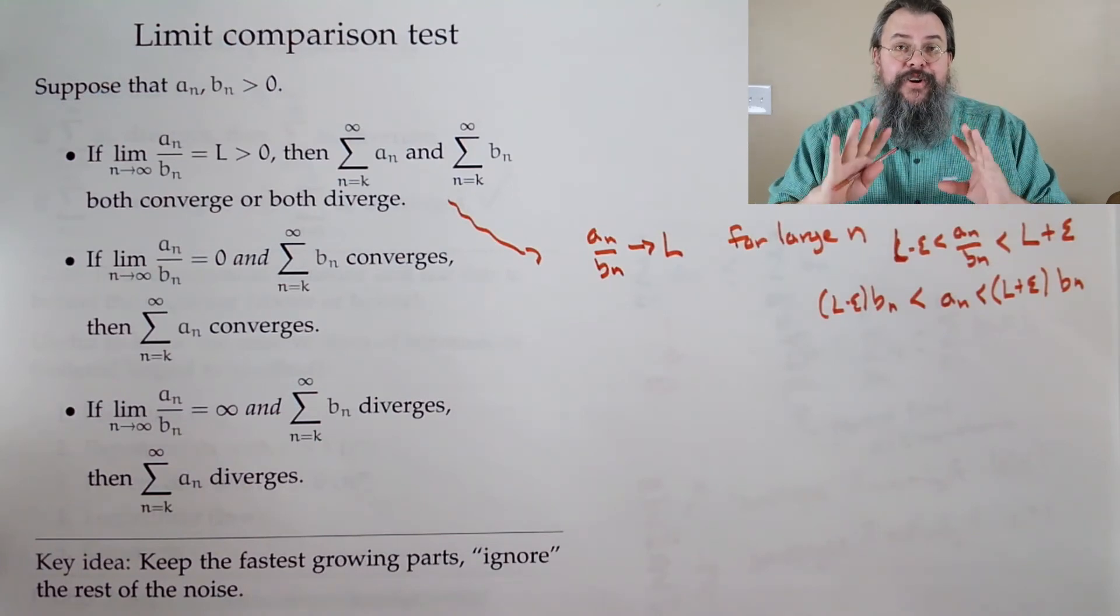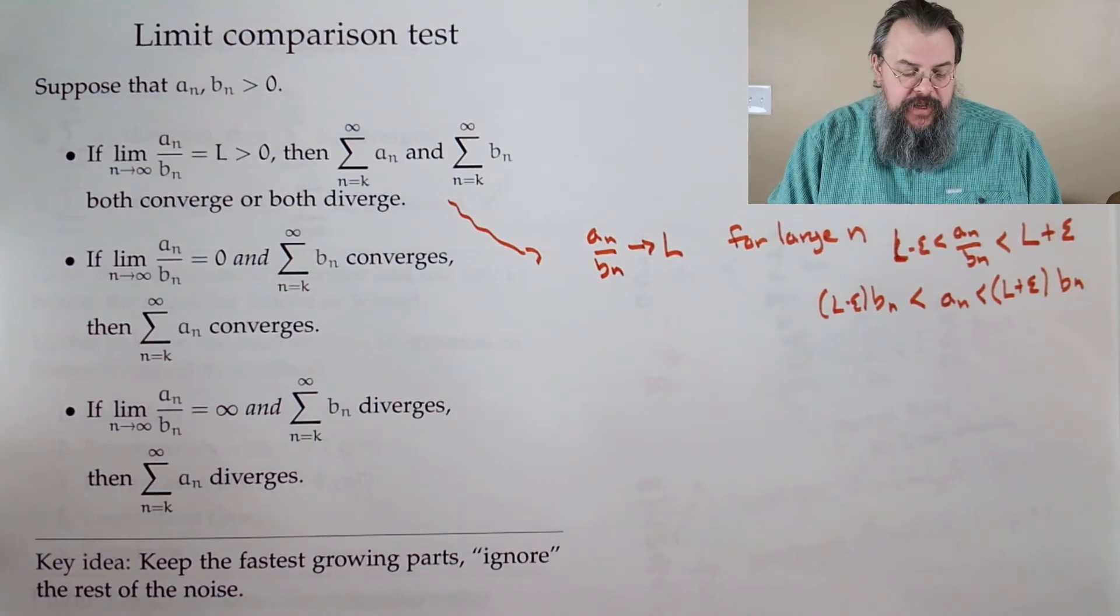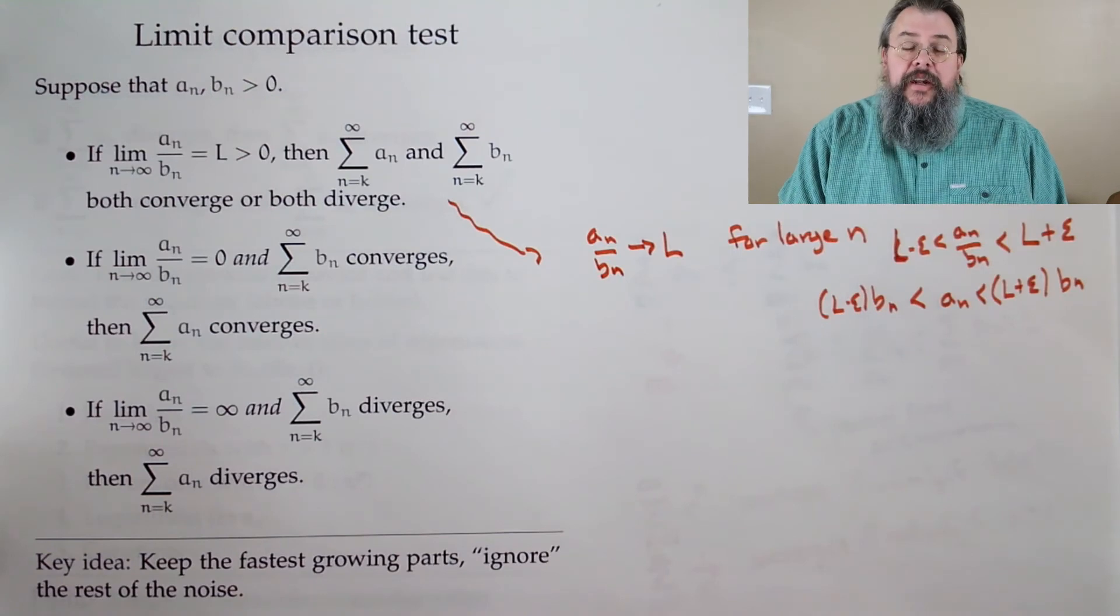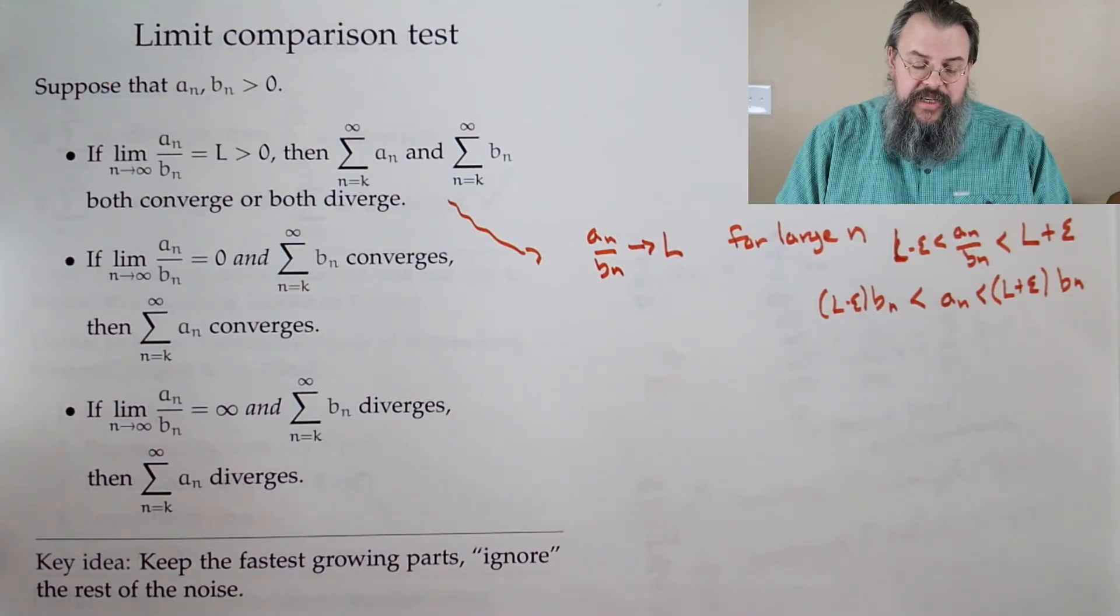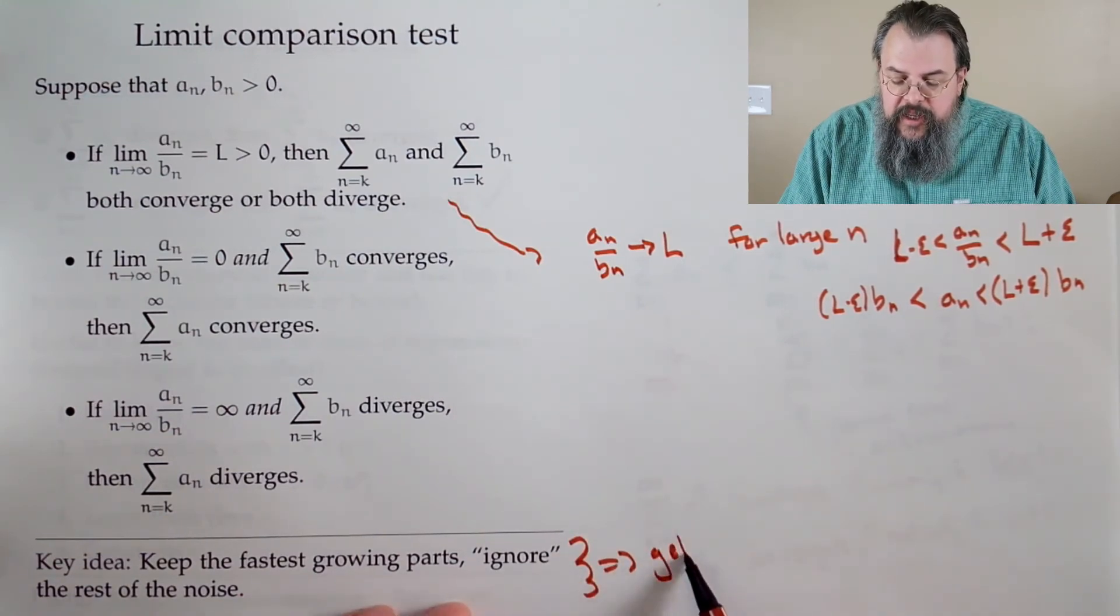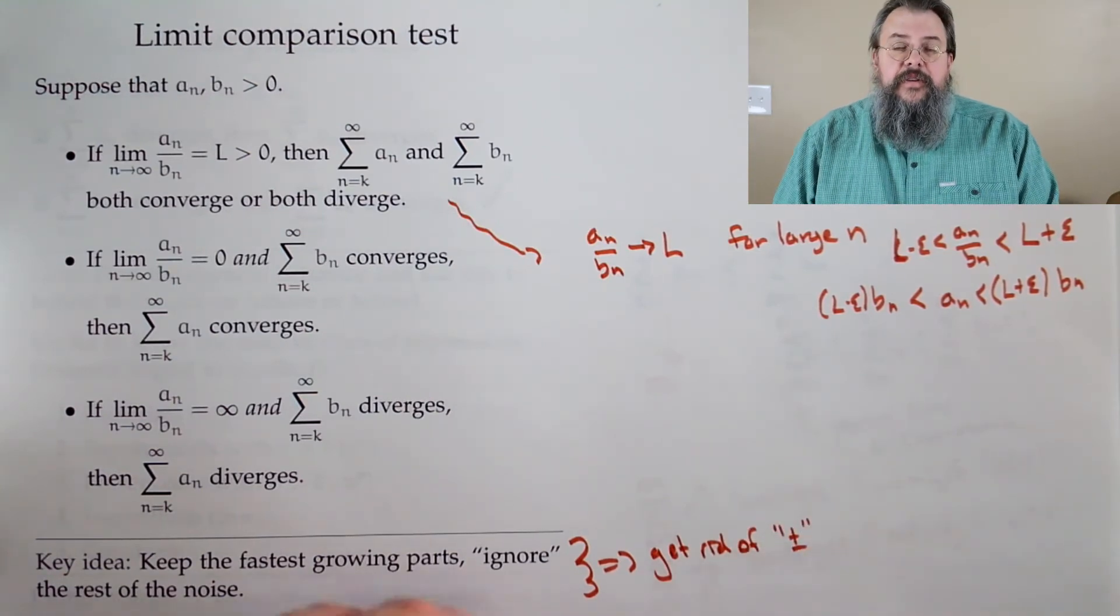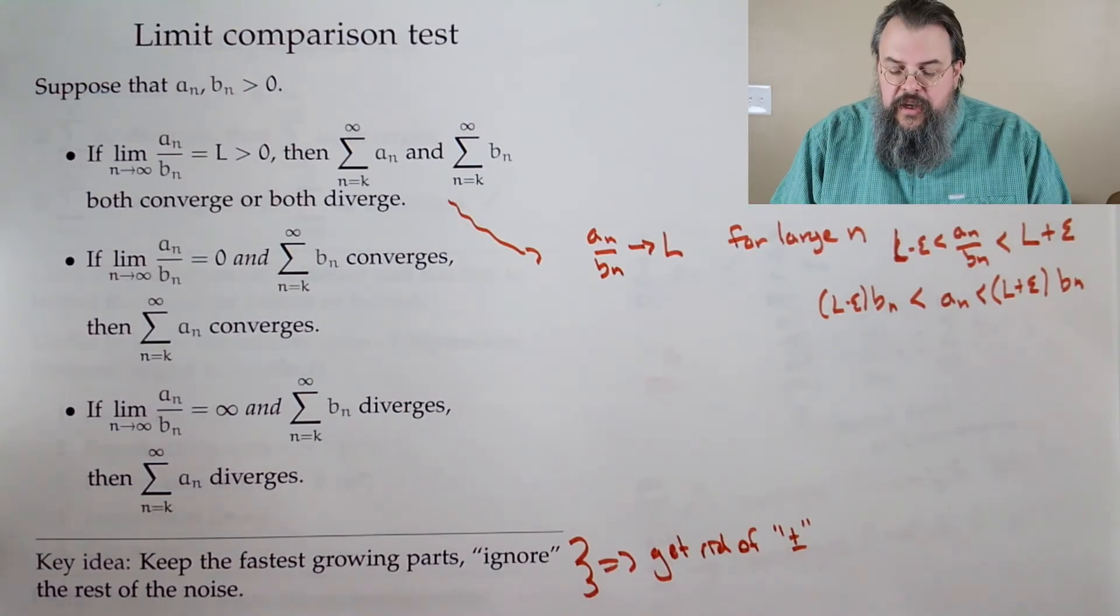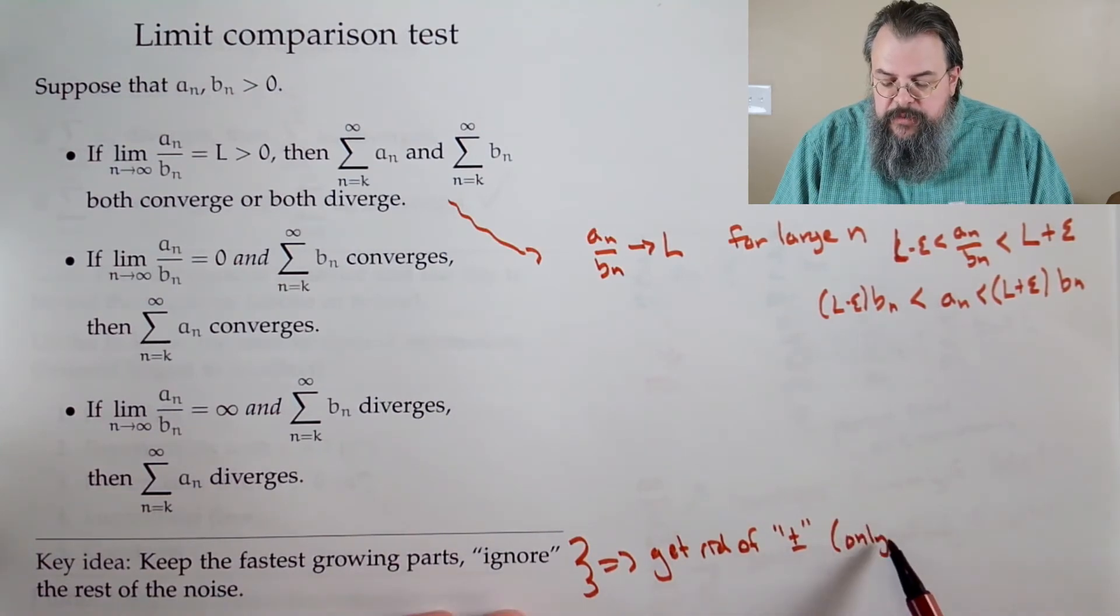Now, this is the majority of the limit comparison test. So I want to make sure we emphasize what's going on here. What's going on is we want to keep the fastest growing parts and ignore the rest. That's what you do with limit comparison test. Another way to put it is to say, get rid of anything where you see plus or minus. So if you say, there's a bunch of terms being added together, or a bunch of terms, and there's a subtraction, how do you get rid of the plus or minus? Well, you only keep the largest terms.